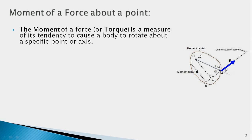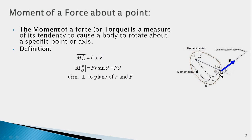A force acting on a rigid body has a tendency to cause not only translational motion of the body but also rotational motion. Therefore the moment of a force or torque is a measure of its tendency to cause the body to rotate about a specific point or axis. The moment about point O is defined as the vector cross product of the position vector r and the force itself. The magnitude of this moment is equal to F times r times sine theta, where theta is the angle between the position vector and the force vector, and r sine theta equals d, the perpendicular distance from point O to the line of action of force F.